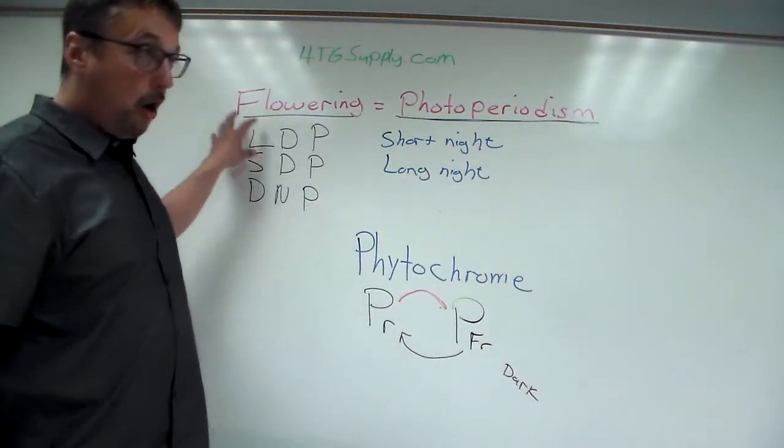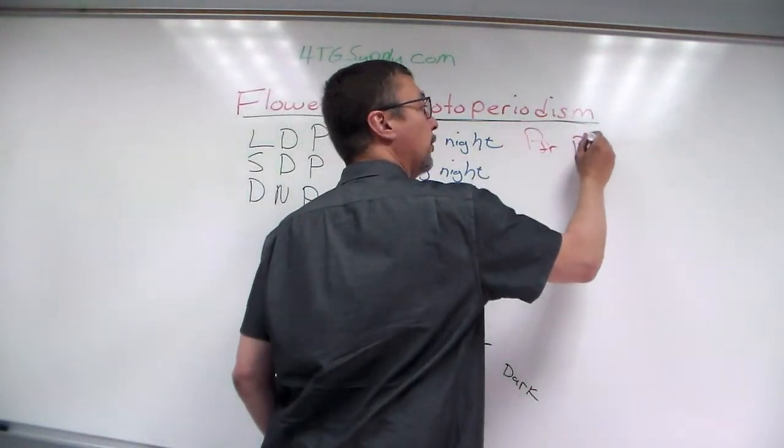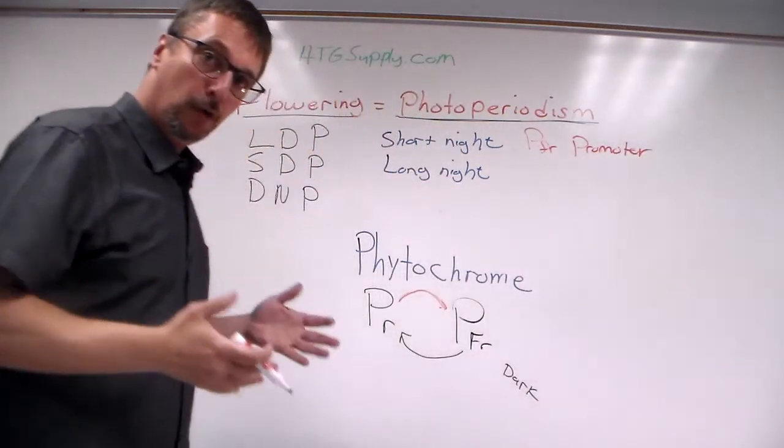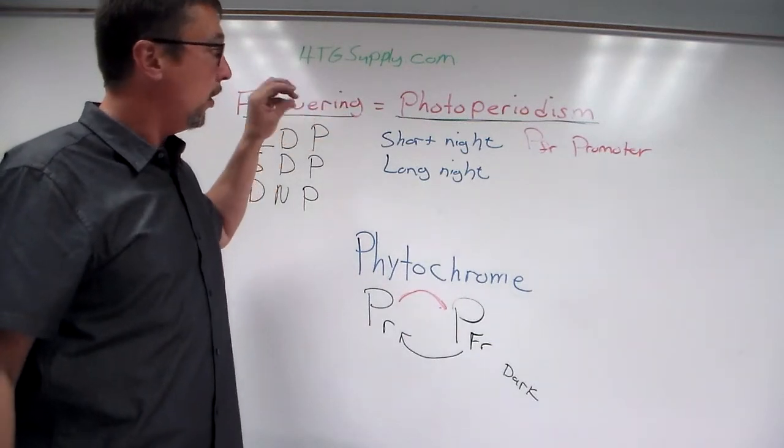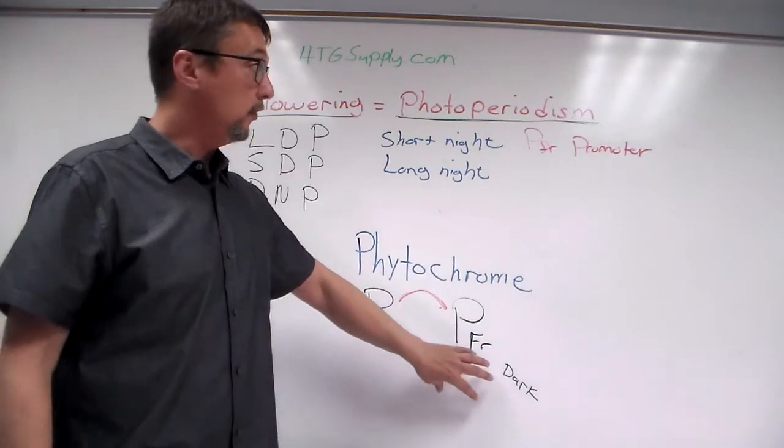Now in long day plants, phytochrome far red is a promoter of flowering. It will promote flowering. And this makes sense. During the summer, when the days are longer and there's less dark, there will be more phytochrome red. And so plants will flower.